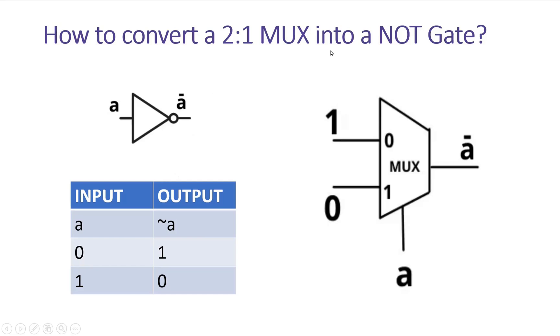Now I will use a 2 to 1 multiplexer and convert that into a NOT gate. I will apply input a to the select line.